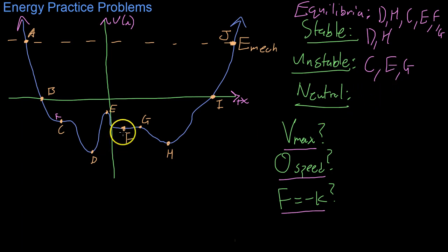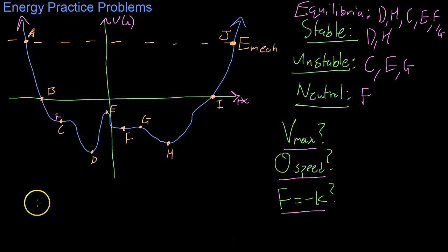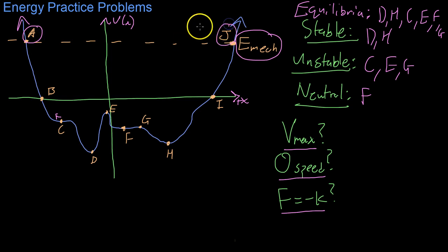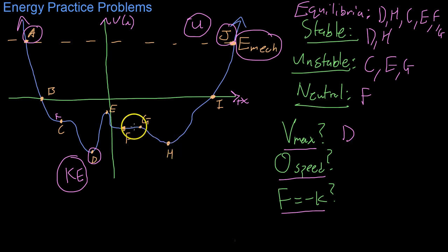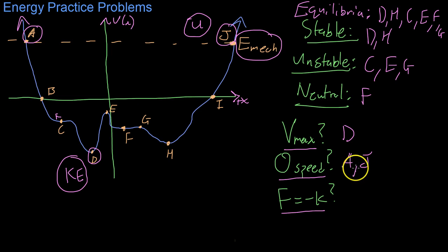Point f is a neutral equilibrium: if you push it to either side, it rolls with constant velocity for a time. Where does maximum velocity occur? Because total mechanical energy is conserved and potential energy increases as you go up the graph, at points a and j it's all potential energy. At the lowest point on the graph, it's all kinetic energy. Therefore the greatest speed occurs at d, the lowest point, and h is a close second. The object has zero speed at points a and j, where there is no kinetic energy.